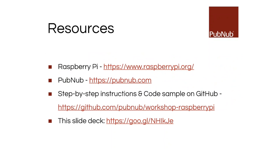Here are the resources. You can learn more about Raspberry Pi at raspberrypi.org and PubNub at pubnub.com. I have all the instructions and extra materials in the GitHub repo. There's also a Node.js example there, though I haven't updated it recently and there may be some issues — but all the Python examples should be fine.